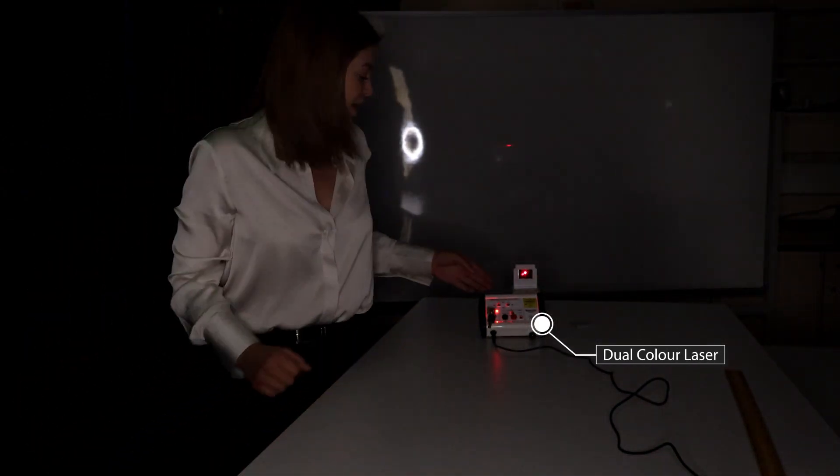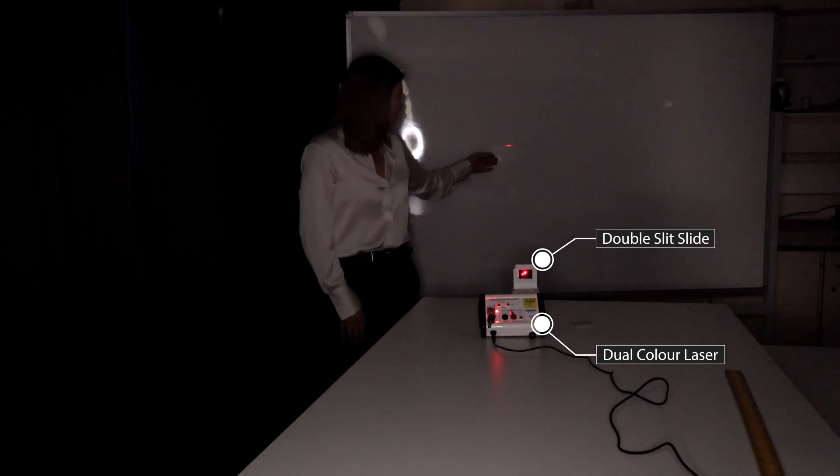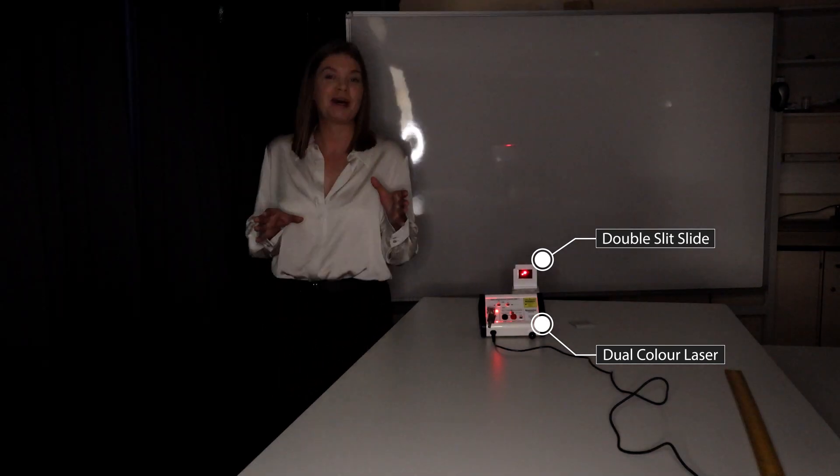Right at the beginning of the 19th century, Thomas Young shone a beam of light through two parallel slits and projected the resulting light onto a screen. What he saw was a really beautiful pattern which we now call an interference or diffraction pattern.